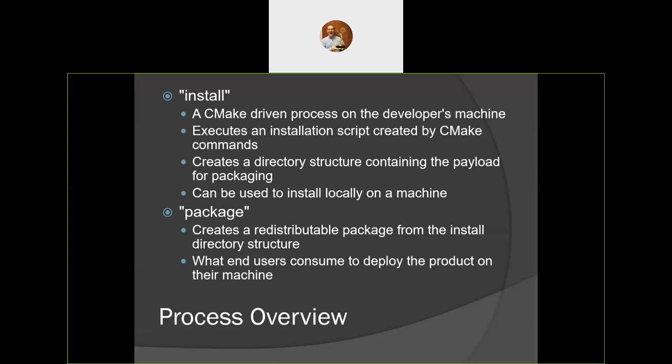That's the idea of what a package does — it collects everything together into one unit that can be atomically installed and uninstalled. Either you get it all or you get none of it, and when you uninstall it, everything that was added is removed. Both install and package are CMake-driven processes that execute scripts containing CMake commands. The install script is written out at CMake configure time and describes the installation steps to take when the install target is built. If you just build the project, all the files are compiled and the installation script is created but not executed.